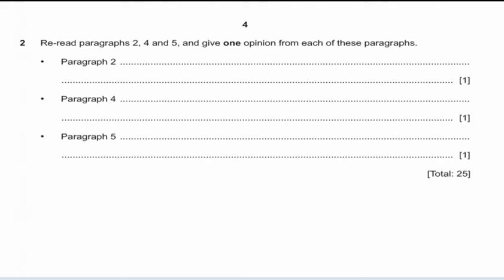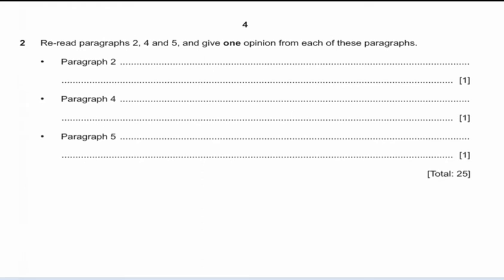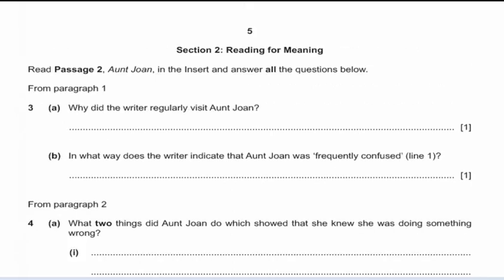So in the first section of the reading paper, there were two main questions: Question 1 was about creating notes and then making a summary, and Question 2 was about scanning for specific information like opinions, advice, or warnings. Section 2, Reading for Meaning, also carries 25 marks. This section uses Reading Passage 2, about 'Aunt Jone,' found in the insert. After reading, you answer questions such as 'Why did the writer regularly visit Aunt Jone?' — answers are found directly from the passage.